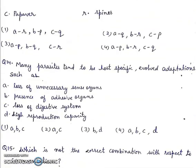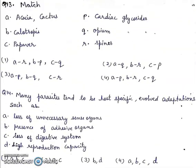Thirteenth question: match the following. Acacia, cactus, calotropes, papaver. Acacia and cactus have spines, calotropes produce cardiac glycosides and papaver produce opium. Right answer will be fourth.